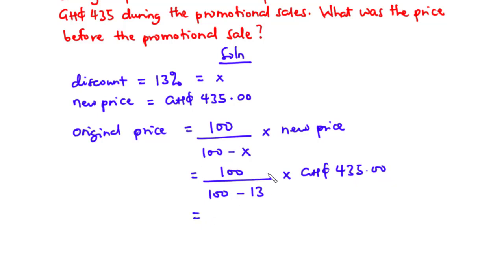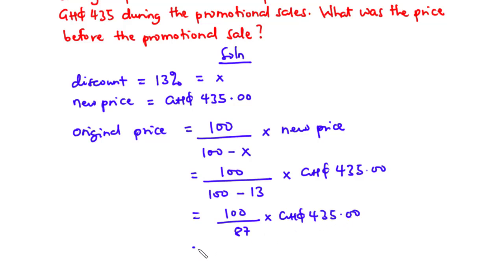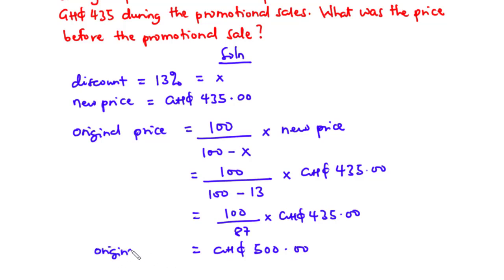We simplify this to 100 divided by 87 — since 100 minus 13 equals 87 — multiplied by 435. This gives 500, so the original price is 500 Ghana cedis.